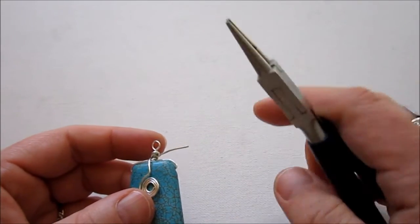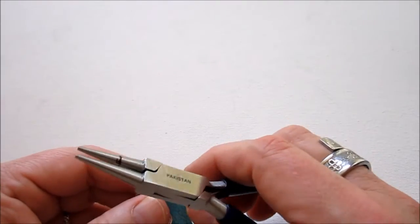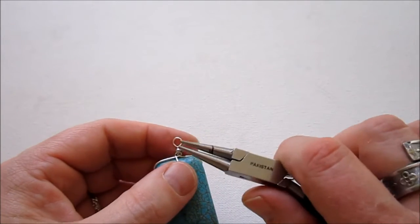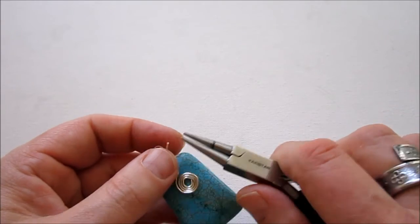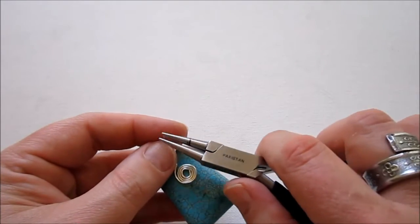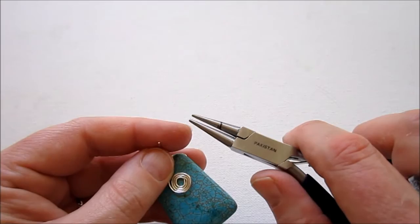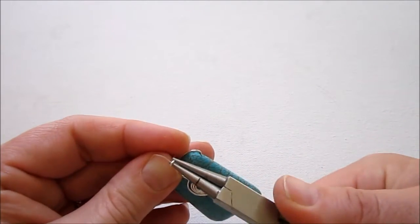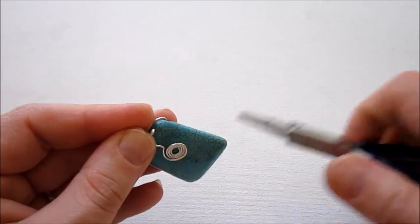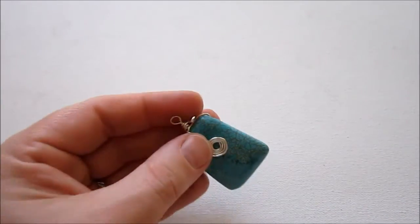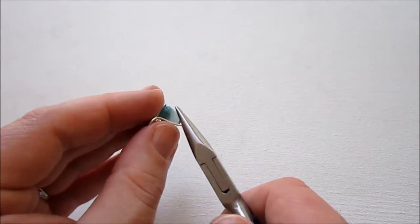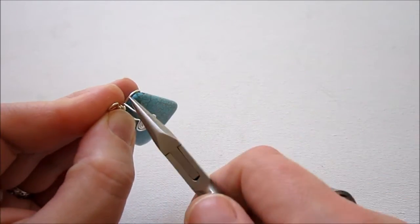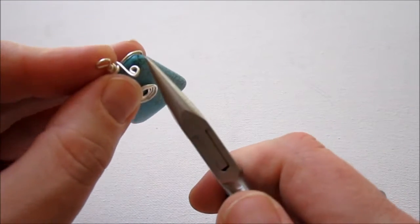And then I'm grabbing my round nose pliers again. I'm going to bring this wire so it's more in the front. I have it off to the side. And I'm going to make a spiral just like I did here. But I'm going to use the very tip of my round nose pliers. So it's a much smaller spiral. And so you just make a loop to begin with the same way. And then use your chain nose pliers to spiral the wire.